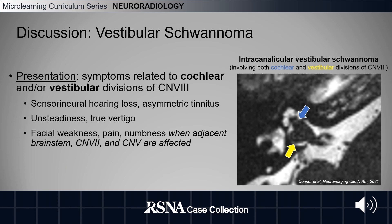Patients often present with symptoms related to the cochlear and/or vestibular divisions of cranial nerve 8. This includes sensorineural hearing loss, asymmetric tinnitus, unsteadiness, or true vertigo. Patients can also have facial weakness, pain, and numbness when the adjacent brain stem, cranial nerve 7, and cranial nerve 5 are affected.